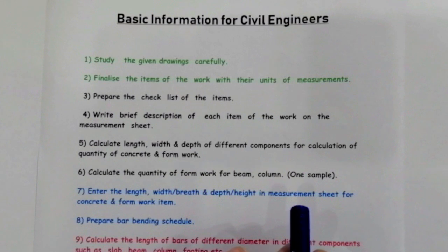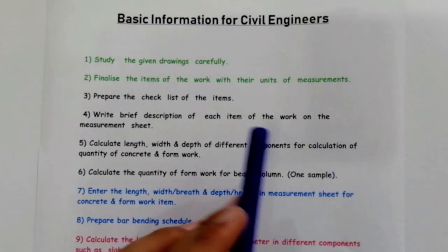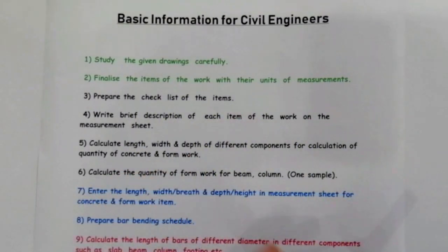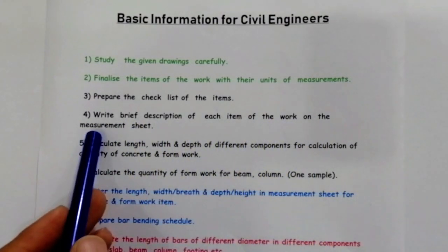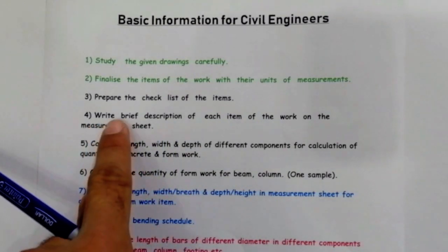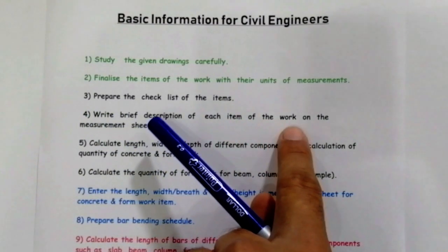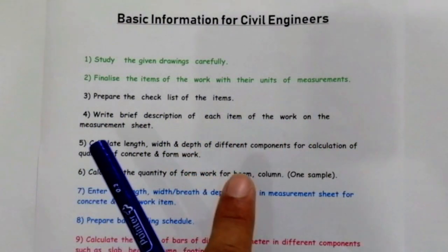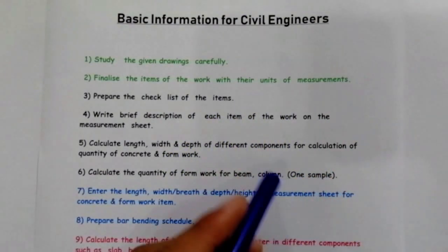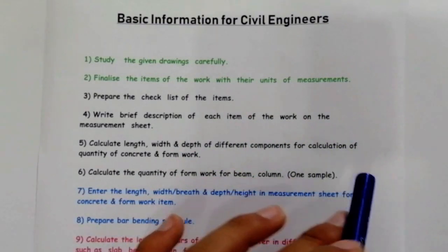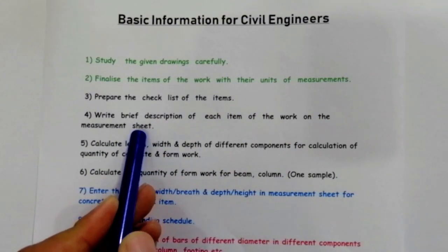The third point is: prepare the checklist of the items for different works. The fourth point is: write a brief description of each item of the work on the measurement sheet. Write the description of each item used in construction works, along with its details, for any type of item in building construction. That will be easy for you on the measurement sheet.